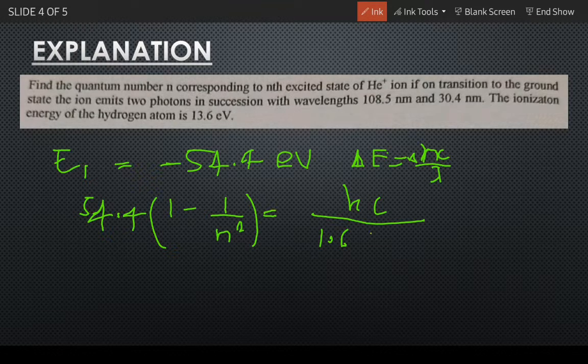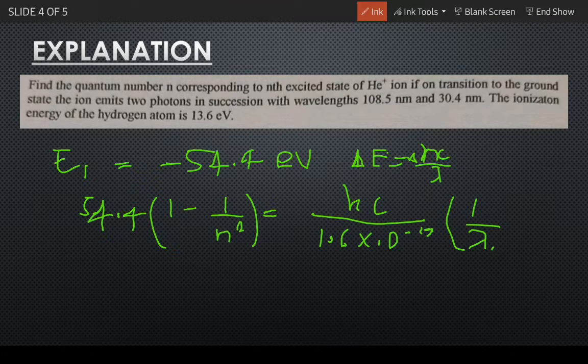1.6 into 10 to the power minus 19, whole times 1 by lambda 1 plus 1 by lambda 2. So now substituting the values, we get this is equal to...